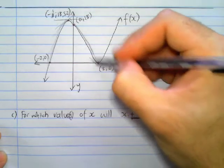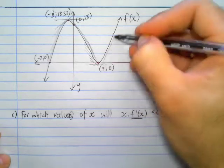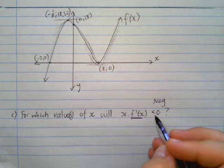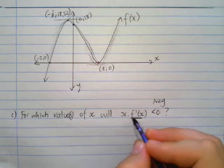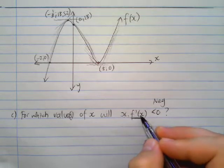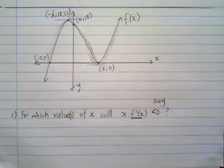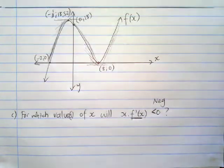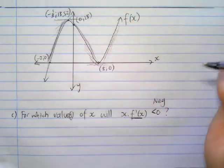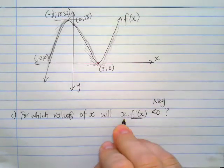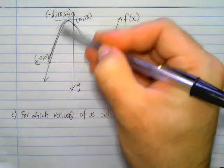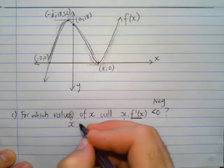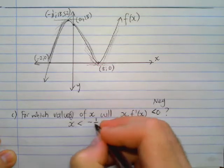Analyzing the sign of x · f′(x): we need a negative result, so we need one factor positive and one negative. In the region to the left of x = −1/3, the x-values are negative but the gradients are positive. A positive gradient times a negative x-value gives a negative product — so we are satisfied when x is less than −1/3. At x = −1/3 the gradient is zero, so the product is zero — not negative.